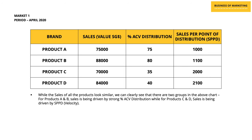Let me help you understand SPPD really well with the help of an example. In this example we are talking about market one and the data is for the period of April 2020. There are four different products — A, B, C, and D. We have their total sales in terms of value, their percentage ACV distribution, and their SPPD, all mentioned in three different columns. If you take a closer look at this illustration, you will see that the first column — sales — is in the range of seventy thousand to eighty-eight thousand dollars, so they are not too far apart from each other.